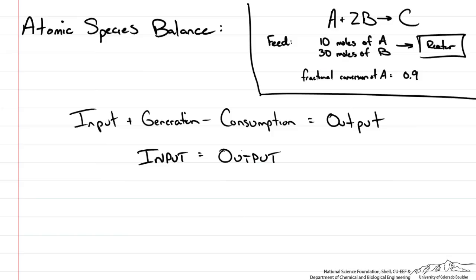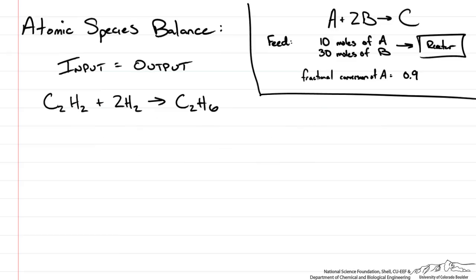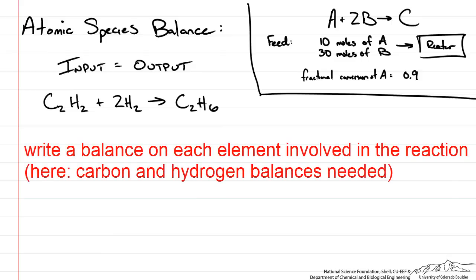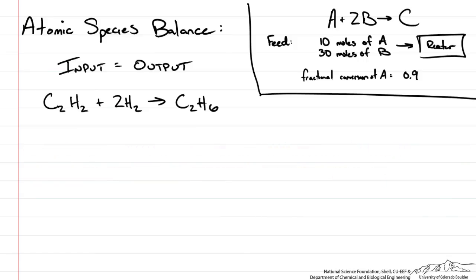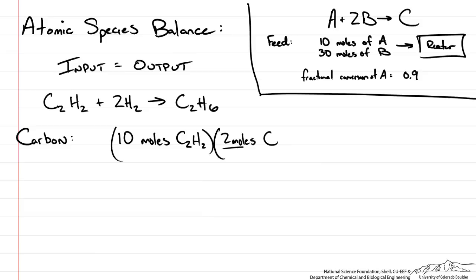Since the reaction A plus 2B goes to C doesn't specify the atoms involved, let's use a concrete reaction: C2H2 plus 2H2 goes to C2H6. This has the same form A plus 2B goes to C, and we will use the same molar flow rates as before. Now we write balances on carbon and hydrogen. For the carbon balance, we track the amount of carbon going in: 10 moles of C2H2 times 2 moles of carbon per mole of C2H2.